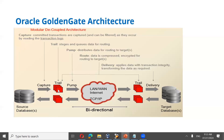Once data is available in the local trail file, the data pump process reads the data from the local trail, sends it over TCP/IP network, and writes it to the remote trail file on the target machine. Once data is in the remote trail, the delivery process — also called the replicat process — reads the data from the remote trail and applies it to the target database. This is the Golden Gate process data flow.